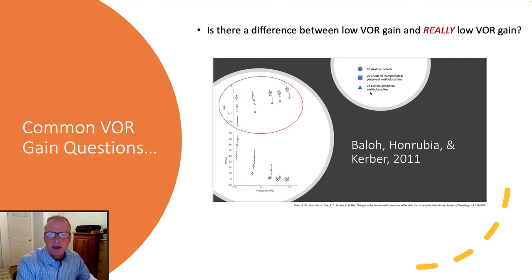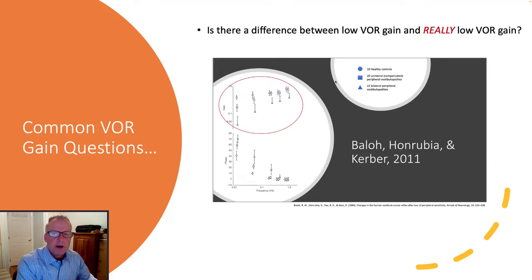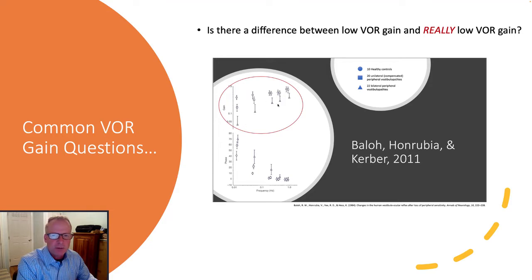In the gain plot, you can see that healthy controls produce almost 50% gain, as we were seeing in our example just now. But for unilateral and bilateral patients, they produce an equivalent loss of maybe 50% gain each time you lose one ear.